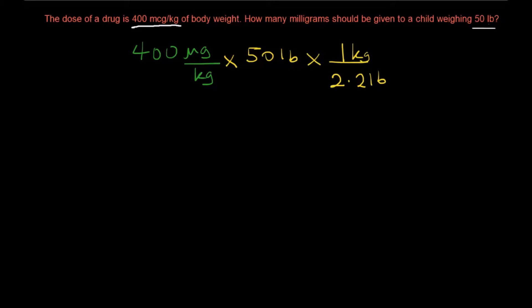So at this particular point, what we can do is we can look at what we have set up and notice that this kilogram right here can cancel out this kilogram. So we're keeping track of our dimensions now. And so this pound can also cancel out this pound.